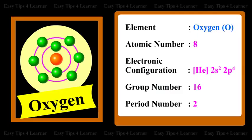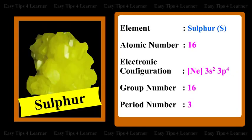For the element Oxygen: atomic number 8, electronic configuration [He] 2S² 2P⁴, group number 16, period number 2. For the element Sulfur: atomic number 16, electronic configuration [Ne] 3S² 3P⁴, group number 16, period number 3.